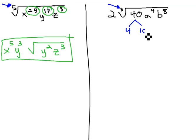You might say 40 is 4 times 10. We can factor the 4 and the 10. 4 is 2 times 2, and 10 is 2 times 5.